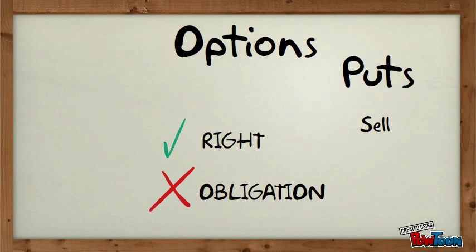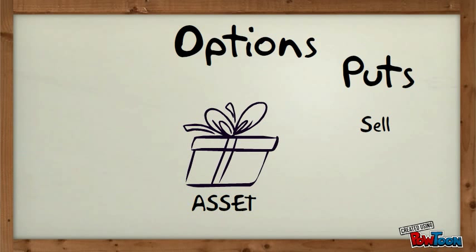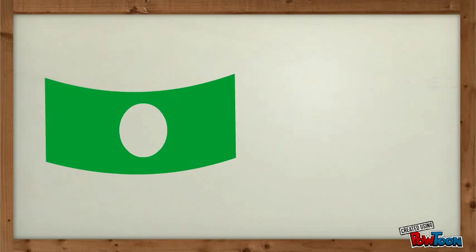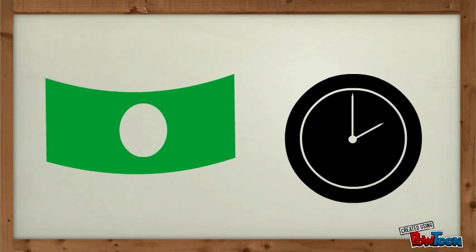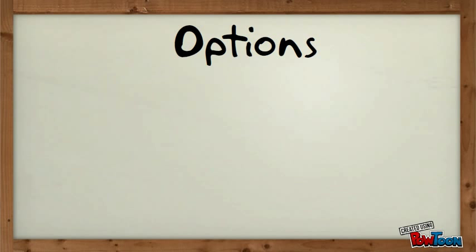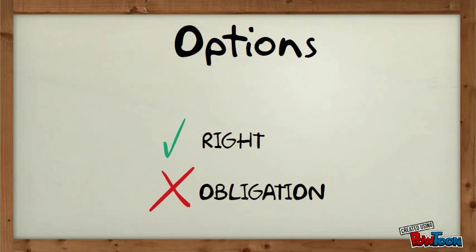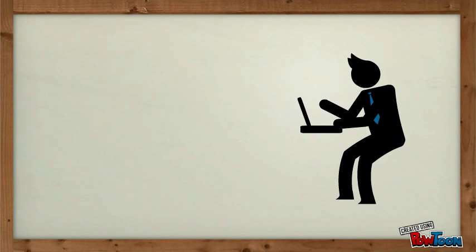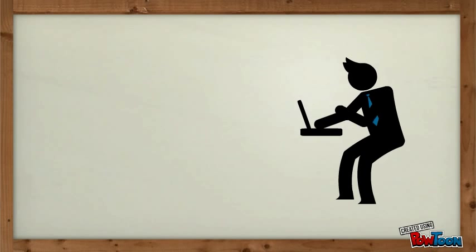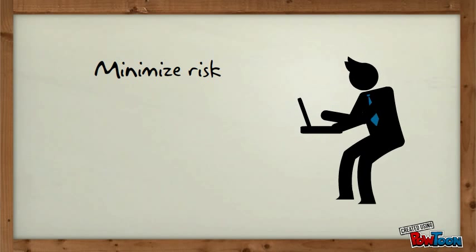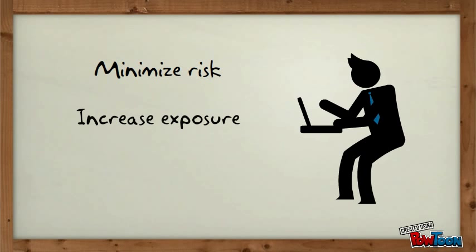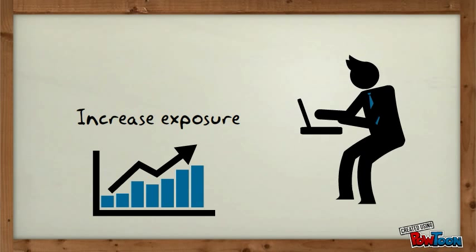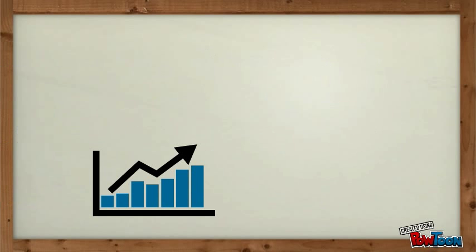Puts give the buyer the right but not the obligation to sell a given quantity of the underlying asset at a given price on or before a given date. Therefore, options are contracts that give the right but not the obligation to buy or sell an asset. Investors typically will use option contracts when they do not want to risk taking a position in the asset outright, but they want to increase their exposure in case of a large movement in the price of the underlying asset.